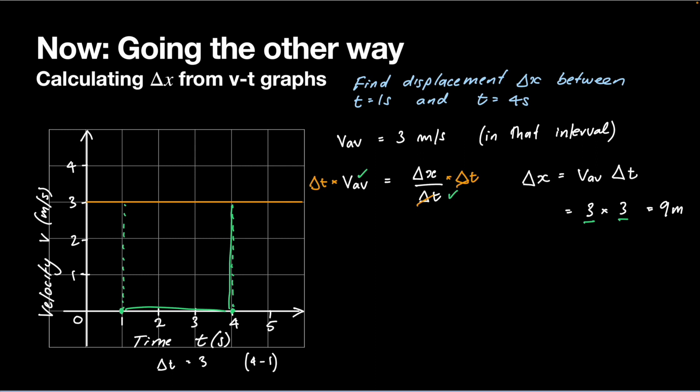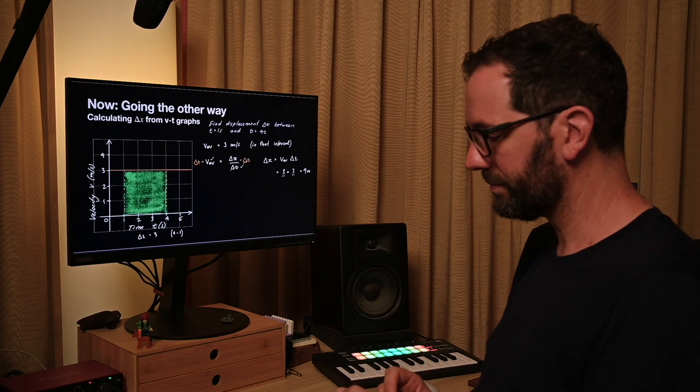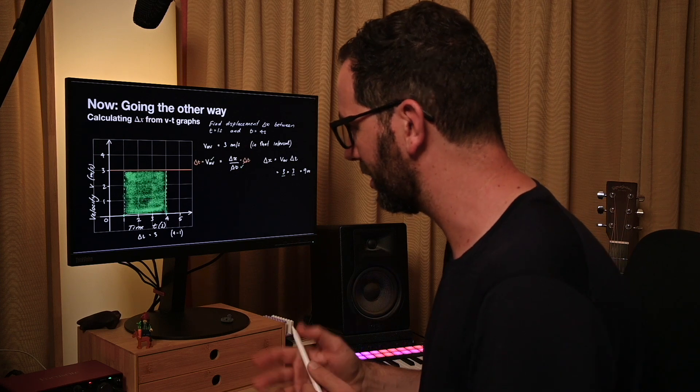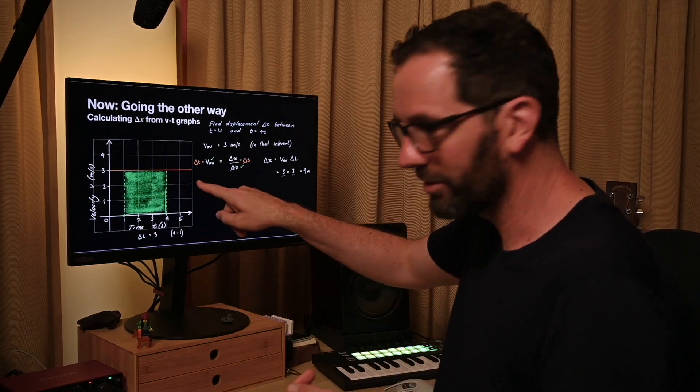What we've really calculated is actually a rectangle. The area of this rectangle, that displacement of nine meters, can be thought of as this area underneath the graph. But it only applies to the situation where we've got a straight line.